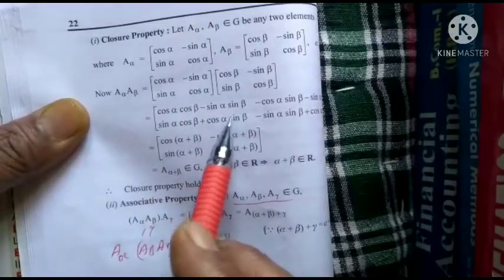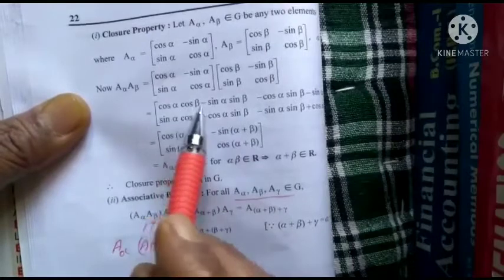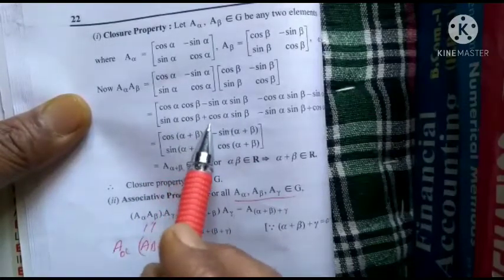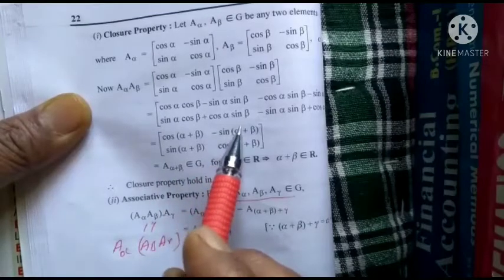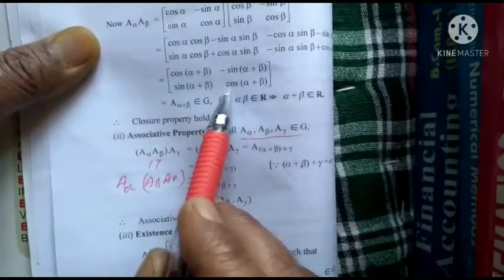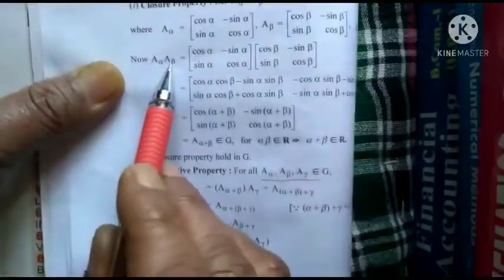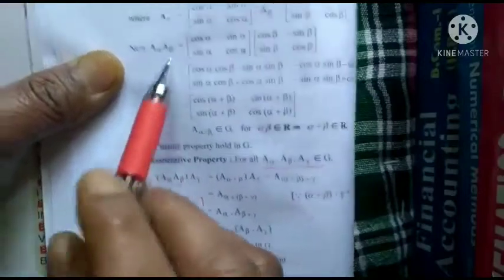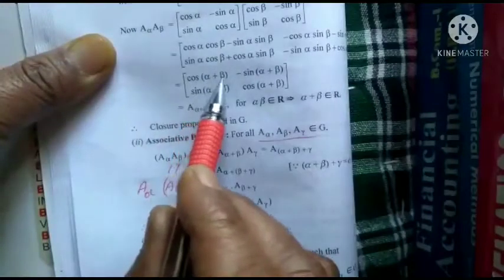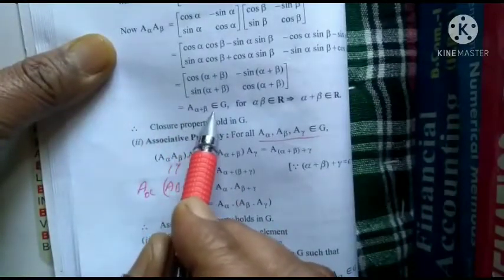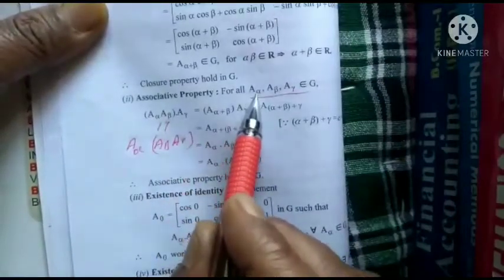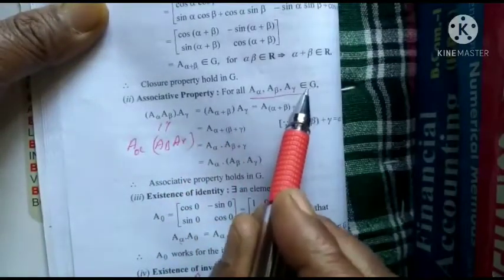Using the trigonometric formulas: cos a·cos b − sin a·sin b = cos(a+b), and sin a·cos b + cos a·sin b = sin(a+b). So the result here gives cos(α+β) in the same position, minus sin(α+β), and sin(α+β) — which is the value of A(α+β). Therefore A(α)·A(β) = A(α+β), which also belongs to G, proving closure.